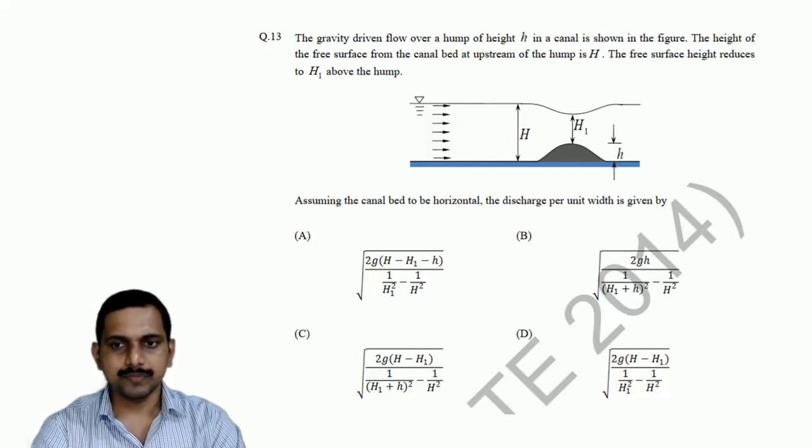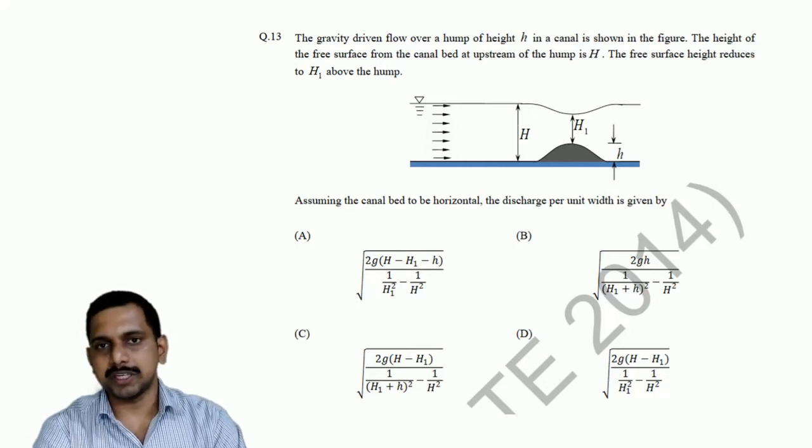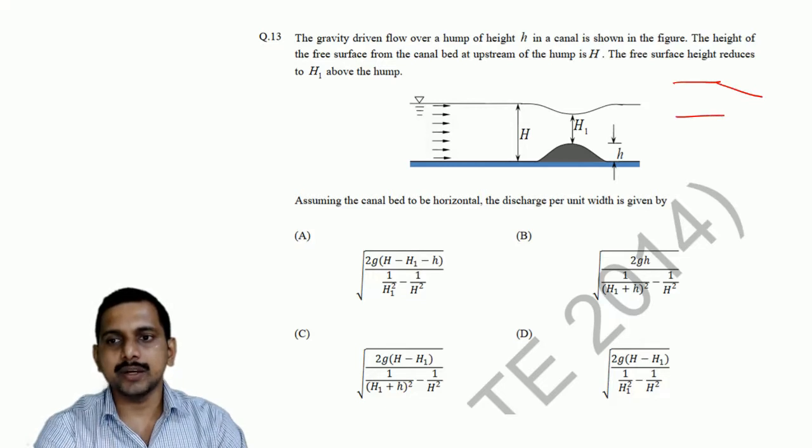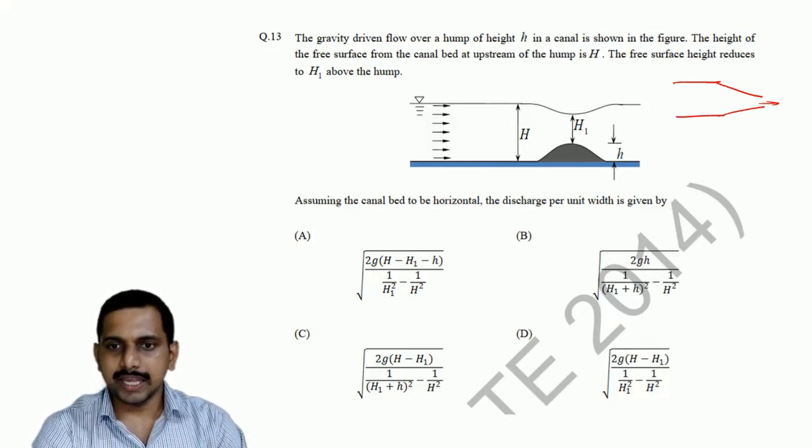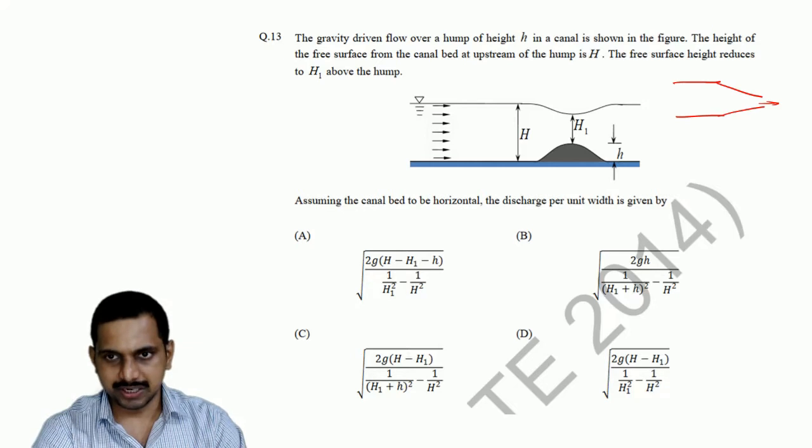Let us see the question. Now here, this is similar to the action in the venturimeter. In the venturimeter or orifice meter, as the area reduces, there is increase in the velocity. Here, area is reducing because there is height, there is acceleration. Because of the acceleration, the area reduces considerably.